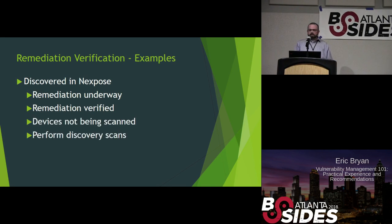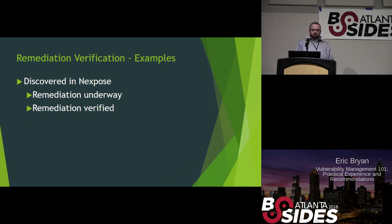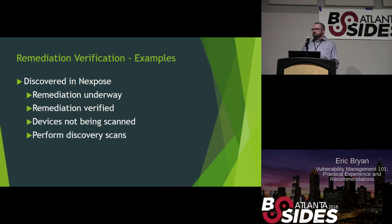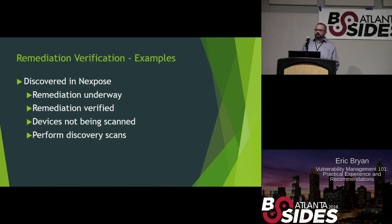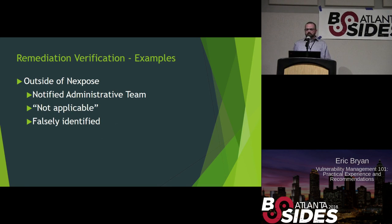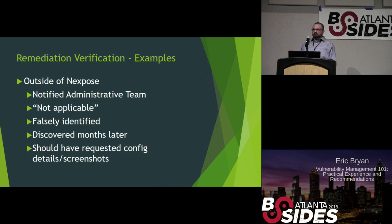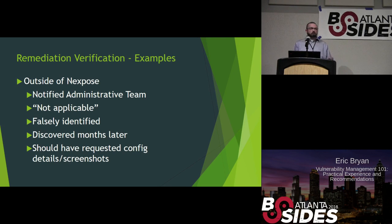Let's look at a few examples. In one instance, Nexpose notified us that many Windows devices were missing a critical patch. The administrative team acknowledged and confirmed remediation was complete, and the Nexpose scan confirmed this. However, there were some devices that weren't being scanned — they had stood up more devices in a different subnet. That was partly on them for not communicating, but partly on us for not doing our discovery scans, which we now do. In another case, a vulnerability was discovered outside of Nexpose; the administrative team responded 'not applicable,' claiming they weren't using the vulnerable configuration — but we later discovered it was very much applicable. This could have been prevented by having multiple people check it from the outset.